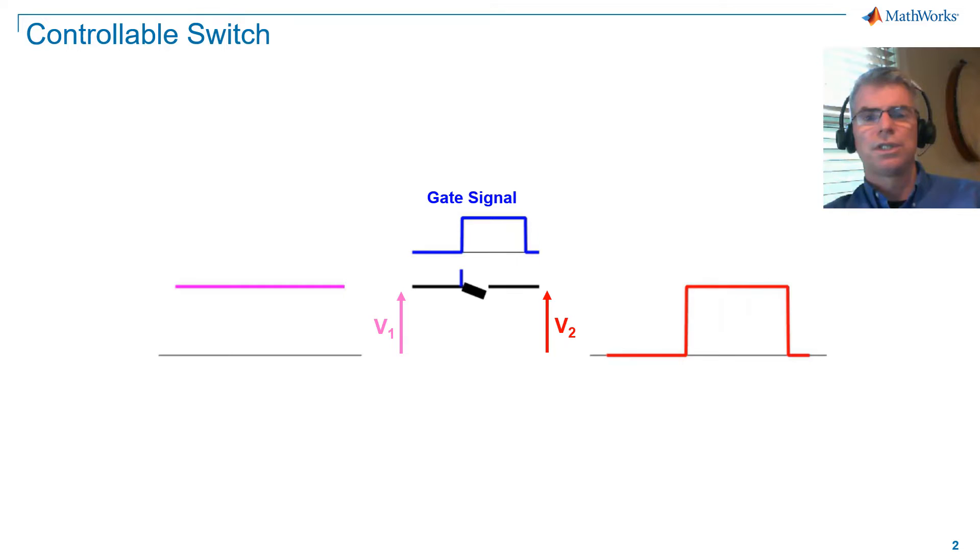Note that when a switch changes its conduction state, we refer to that as commutation. Also note that a single switch cannot reverse the polarity of the DC source.